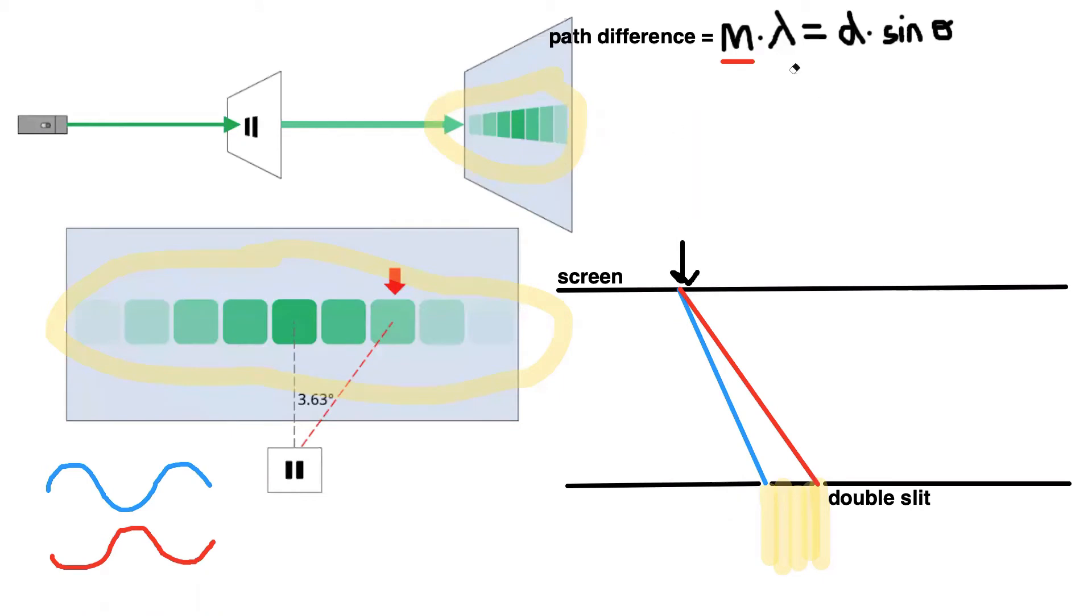So this equation up here can be used to find either the maxima or the minima. And that M that's in the equation is going to either be a whole number to indicate maxima, or it will be a half number to indicate minima.